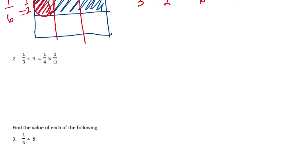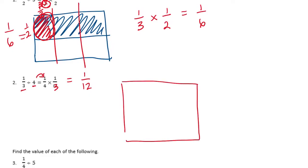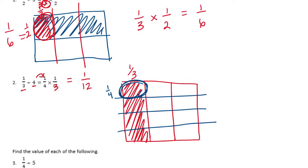Number 2: 1/3 divided by 4. They took the 4 and made it 1/4 times 1/3, which equals 1/12 — 1 times 1 is 1, and 4 times 3 is 12. We also need to draw a model. We have 1/3 and split it into 1/4, giving us 1 piece shaded out of 12. This is the same overlapping-colors shading method from 5th grade.